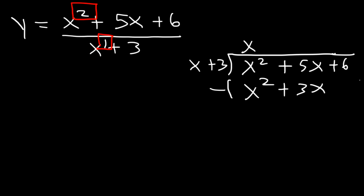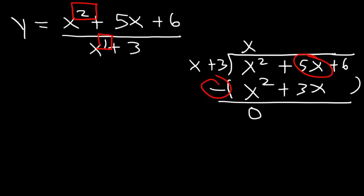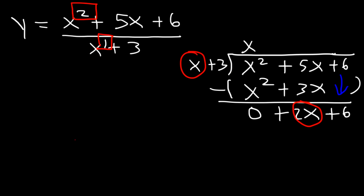Now subtract: x squared minus x squared is 0, and 5x minus 3x is positive 2x. Bring down the 6. Now divide 2x by x, which gives 2.